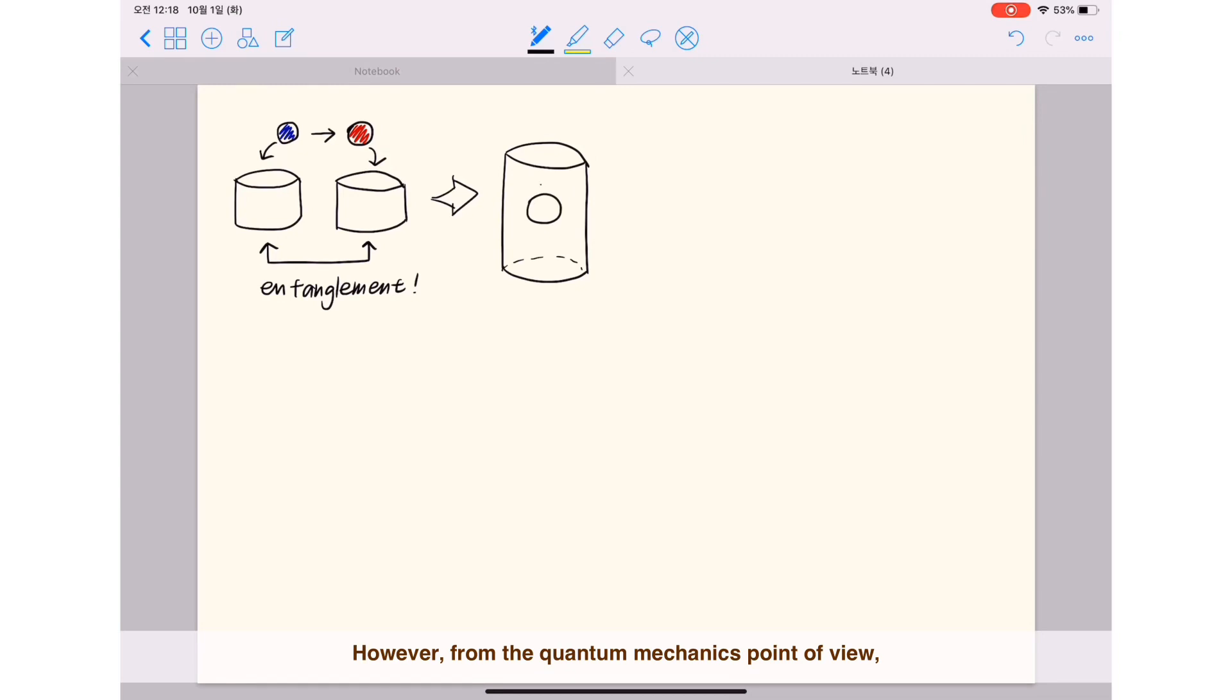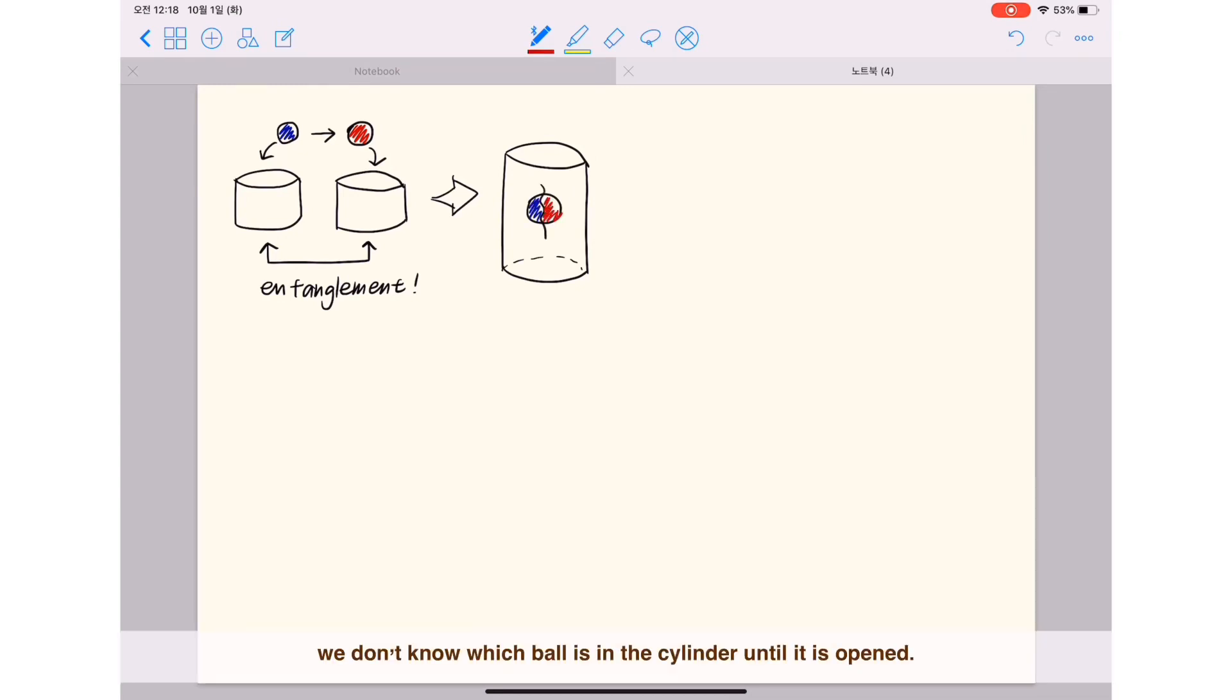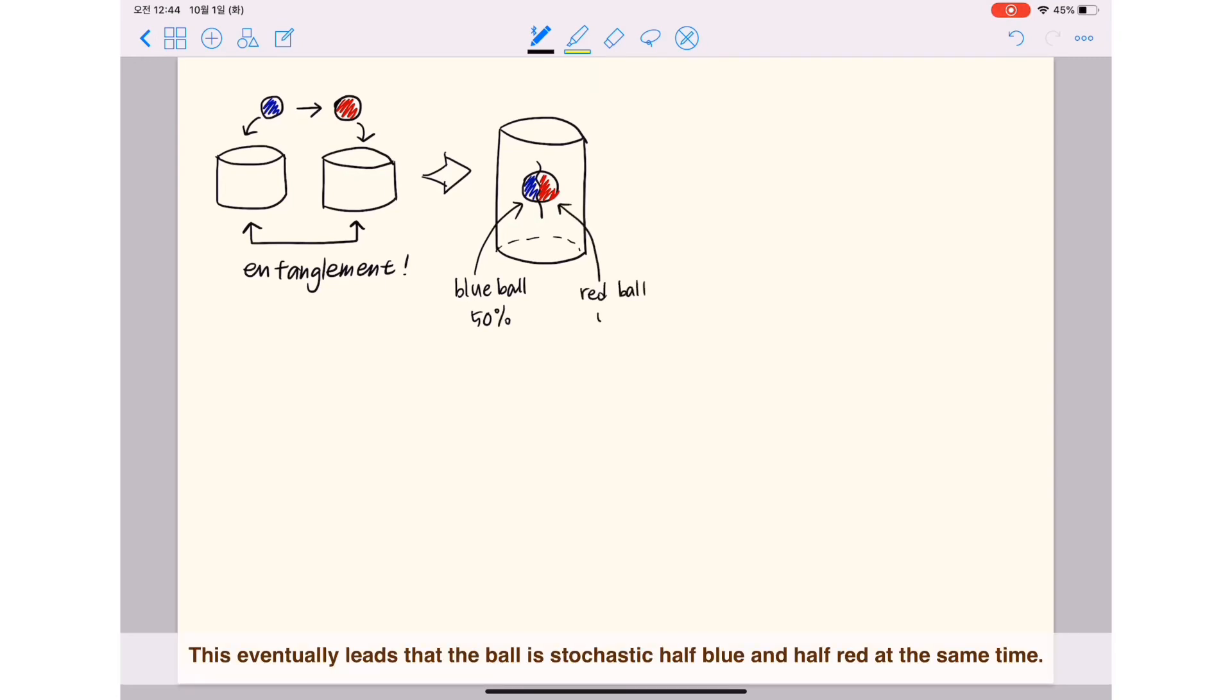However, from the quantum mechanics point of view, we don't know which ball is in the cylinder until it is opened. This eventually means that the ball is stochastically half blue and half red at the same time.